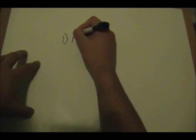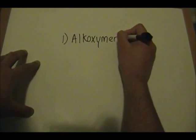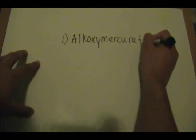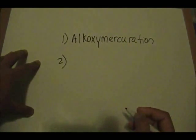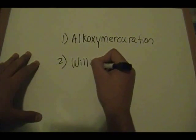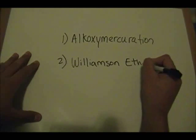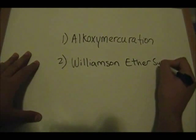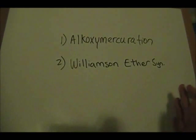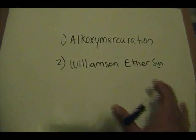There are two main ways that you can prepare ethers. The first one is called alkoxymercuration. The second way you can prepare an ether is by the Williamson Ether Synthesis. Those are the two main ways you can prepare ethers. There are other ways you can make ethers, but these are the two main ways I'll be focusing on.